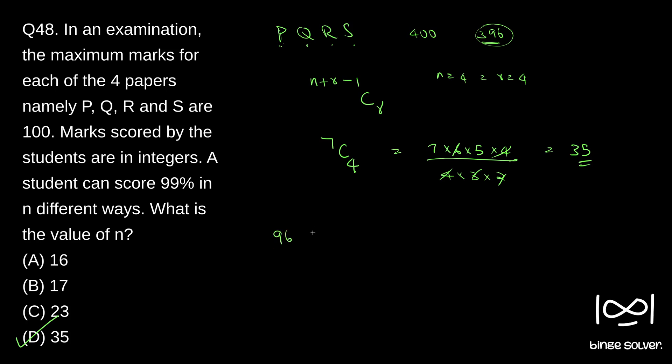So one way is, first case will be losing four marks entirely in one paper itself. So either in P or Q or R or S. So if you have only one paper to choose, our marks will be somewhat like this: 96, 100, 100, 100. Now 96 can go in whether in P or Q or R or S. So total how many ways? Just 4 C 1 or four ways.